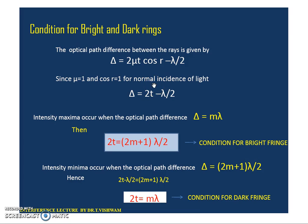Let us recall the condition for path difference. Delta is equal to 2μd cos r ± λ/2, where μ is the refractive index of the film, d is the thickness, cos r is the angle of refraction, and λ/2 is the correction due to phase change. Since the air film has refractive index equal to 1 and rays are incident normally, delta equals 2d − λ/2. Equating to mλ gives the condition for a bright fringe; equating to (2m+1)λ/2 gives the condition for a dark fringe.